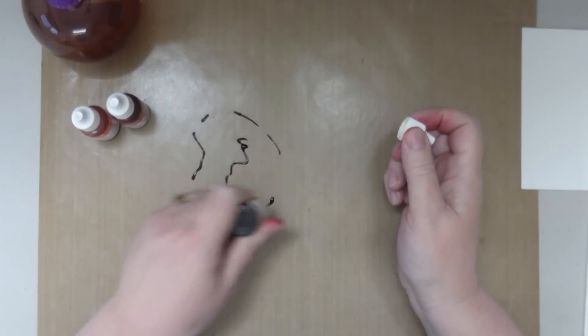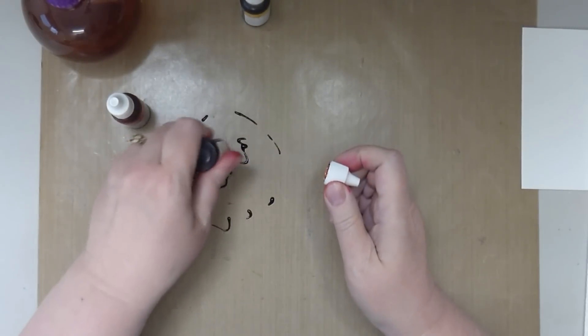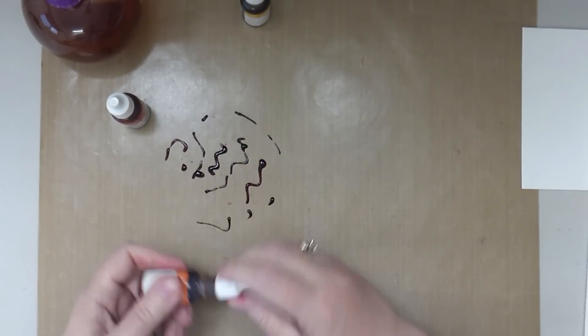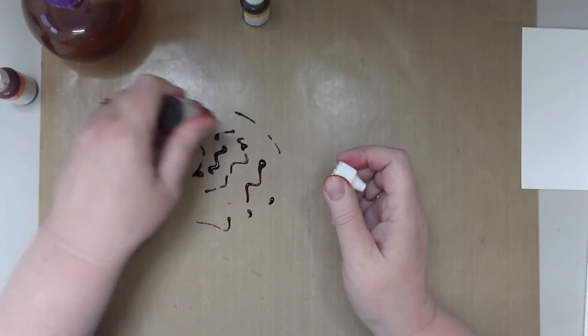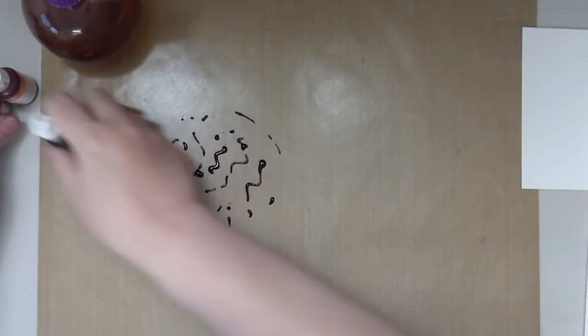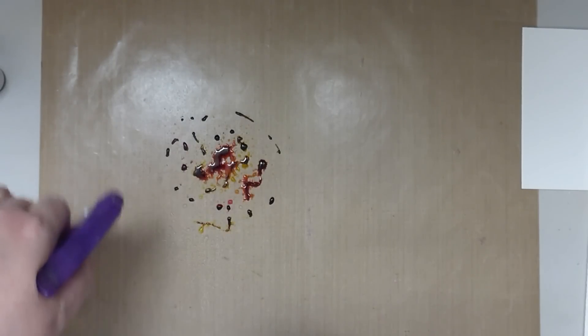First of all, I'm just going to squiggle some ink re-inker onto my mat just randomly. I'm using actually quite a lot today. You could probably use a lot less ink than this. Now I'm just going to take it and mist it, add some water to dilute it.